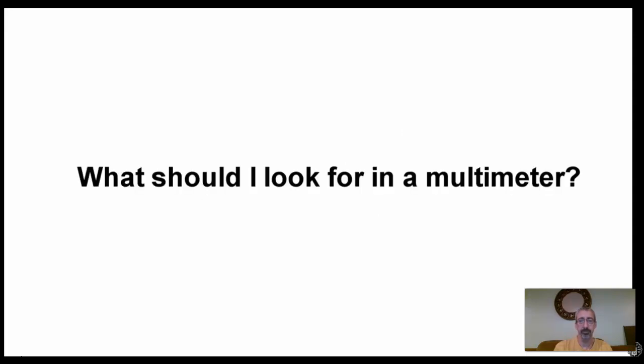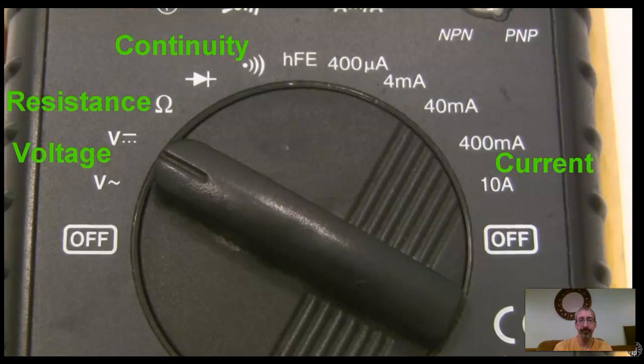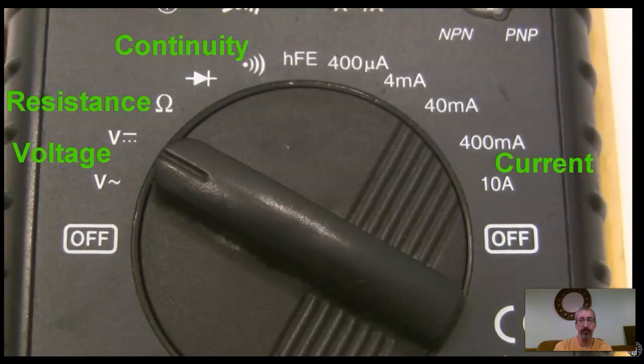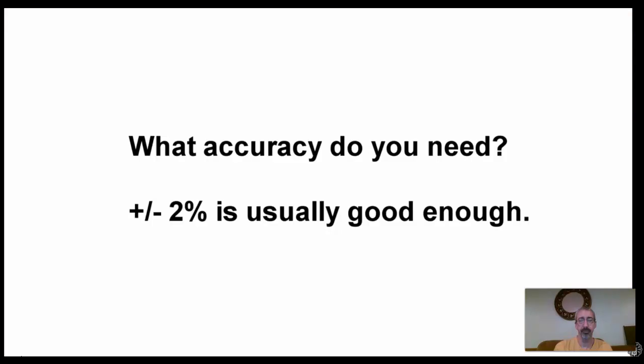Okay, so how do you choose which one to get? First up, at the bare minimum, make sure the meter you're looking at can measure voltage, current, resistance, and continuity. If you can find one that measures capacitance and temperature as well, go for it. Unless you're working with some super special application, don't worry too much about accuracy. Plus or minus 2% is usually good enough, and even cheap multimeters these days will be that accurate or better.